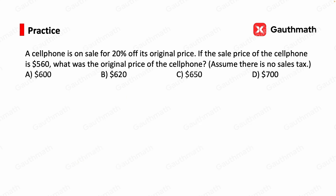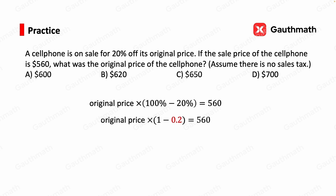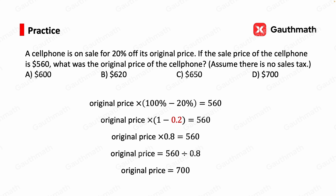Let's look at one example. A cell phone is on sale for 20% off its original price. If the sale price is $560, what was the original price? Since it's a markdown, we set up the equation: original price times (100% minus 20%) equals $560. Converting to decimals: original price times 0.8 equals $560. Dividing both sides by 0.8, the original price was $700.